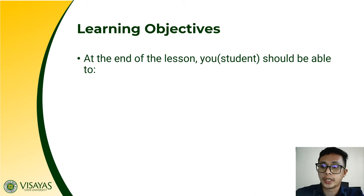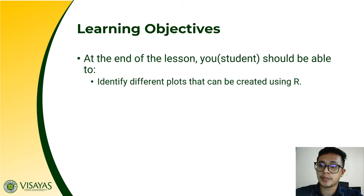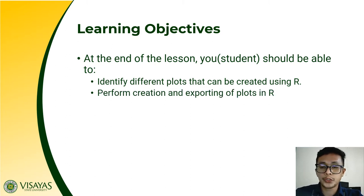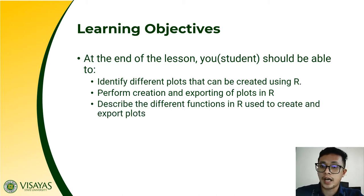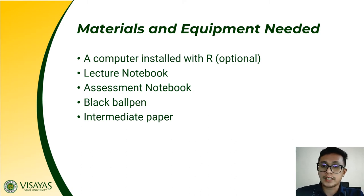To start, we are going to define the learning objectives that each of you must attain by the end of this lesson. You should be able to identify different plots that can be created using R, perform creating and exporting plots in R, and describe the different functions used to create and export plots. You may have a computer — it's optional — a lecture notebook, an assessment notebook, a black ball pen, and intermediate paper.